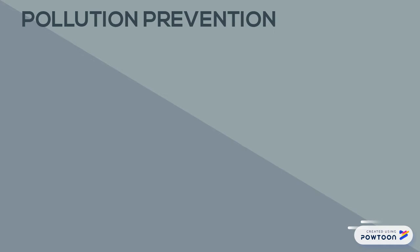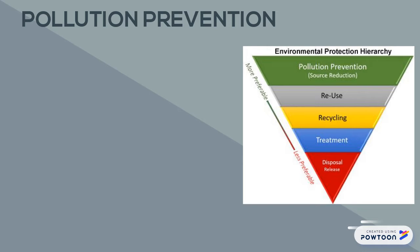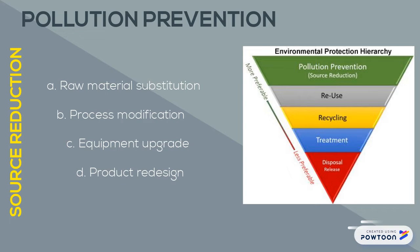What we need is pollution prevention. Based on this hierarchy, the most preferable means to environmental protection is source reduction — minimizing pollution generated during the production phase is the ounce-of-prevention approach to waste management.